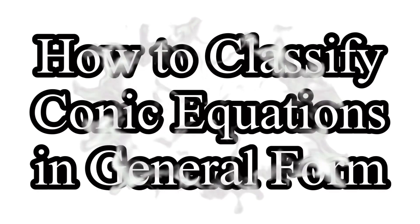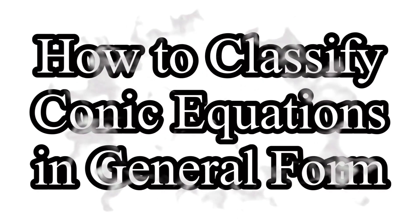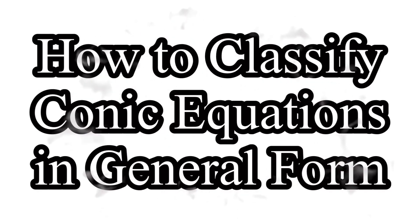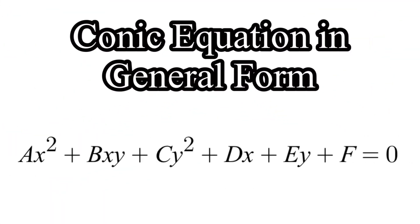Hello everyone. This video will show how to classify conic sections given its equation in general form. The general form of a conic section is ax² + bxy + cy² + dx + ey + f = 0.